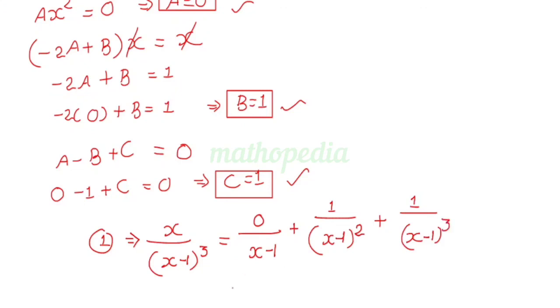So that equals 1 by (x minus 1) whole square plus 1 by (x minus 1) whole cube. This is the required partial fraction.